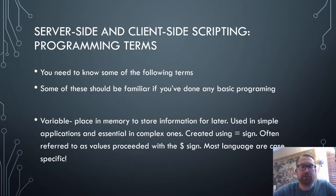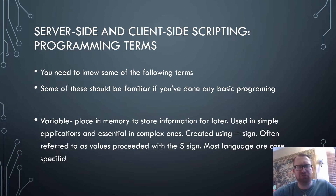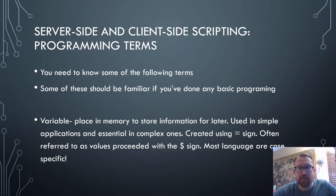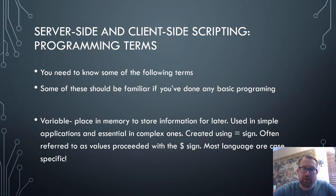You need to know some basic programming terms. The first one is a variable, which should be familiar if you've done any science experiments. In our case, a variable is a place in memory to store information for later. It's used in simple applications and is essential in complex ones. It's created using the equal sign, and values are often preceded with the dollar sign. Most languages are case specific, so a variable named 'cat' with a lowercase letter would be very different from one with a capital letter.